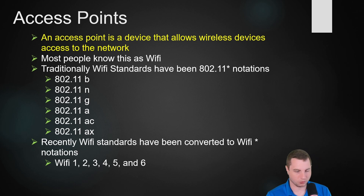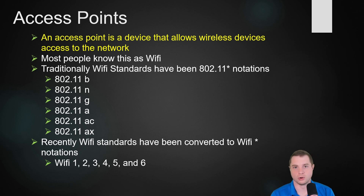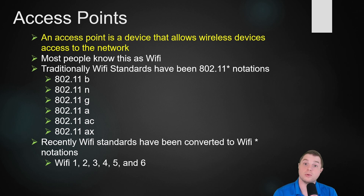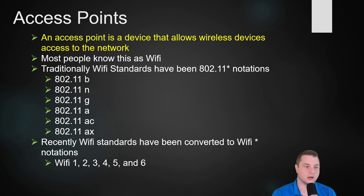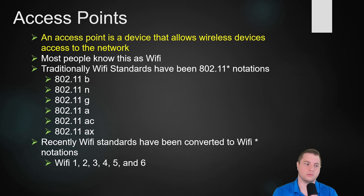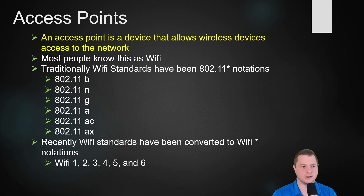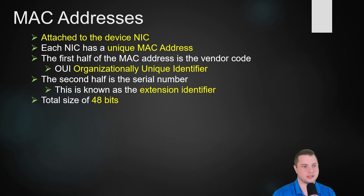Wi-Fi naming has changed with Wi-Fi 6, and retroactively the standards were renamed Wi-Fi 1 through 5. In networking certification exams you'll need to know the 802.11 notation. The standards include 802.11b and 802.11g (2.4 GHz), 802.11a (5 GHz), 802.11n, 802.11ac, and 802.11ax — which is Wi-Fi 6. 802.11ac is pretty common; n and g were more specialized for their time and have since been replaced.